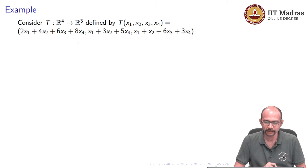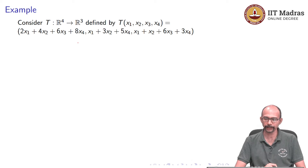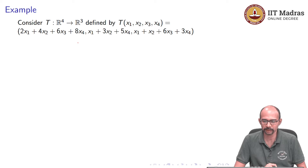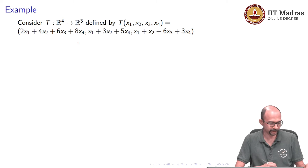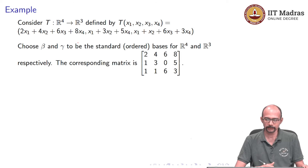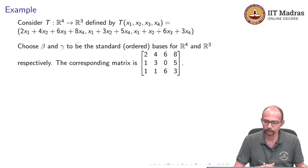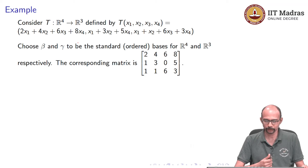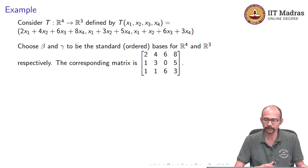Consider the linear transformation T: R⁴ → R³ defined by T(x1, x2, x3, x4) = (2x1 + 4x2 + 6x3 + 8x4, x1 + 3x2 + 5x4, x1 + x2 + 6x3 + 3x4). The first thing we do is choose ordered bases — let us choose the standard basis for R⁴ and R³. The corresponding matrix has coefficients from the linear transformation: the first row is 2, 4, 6, 8; the second row is 1, 3, 0, 5; and the third row is 1, 1, 6, 3.